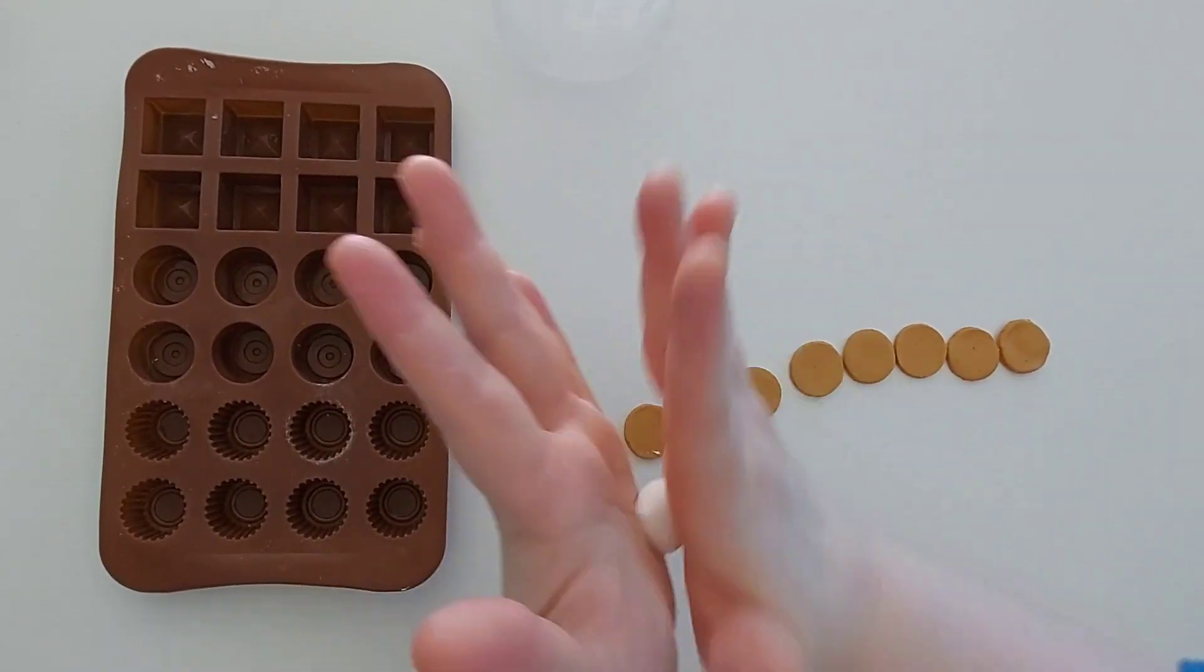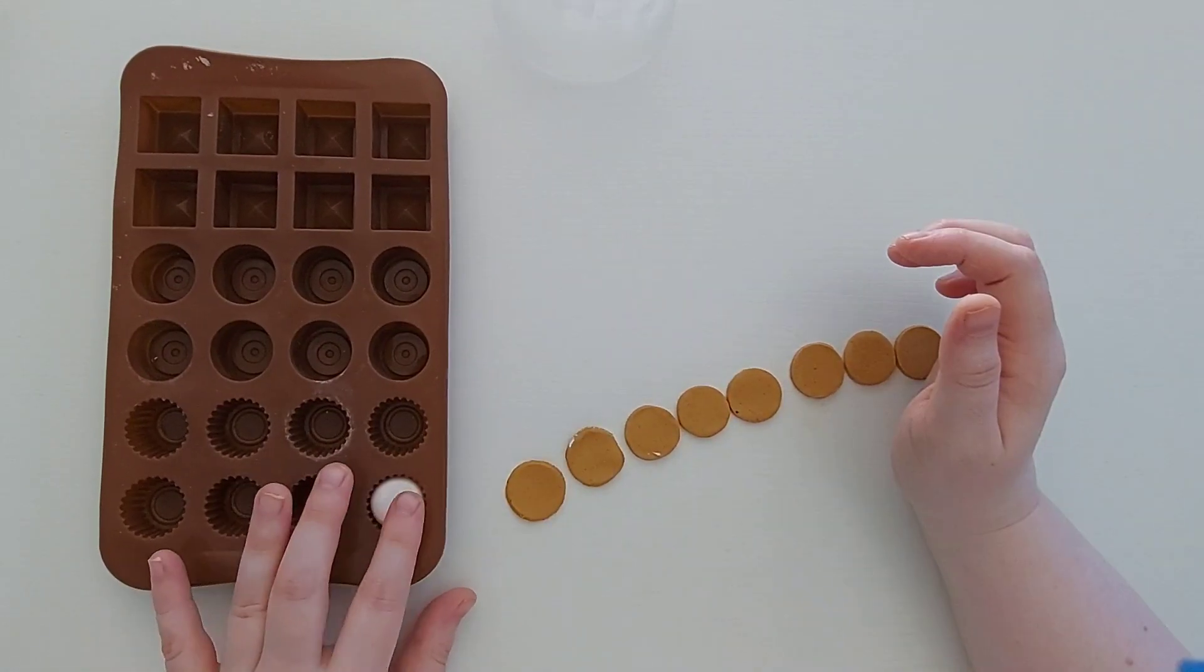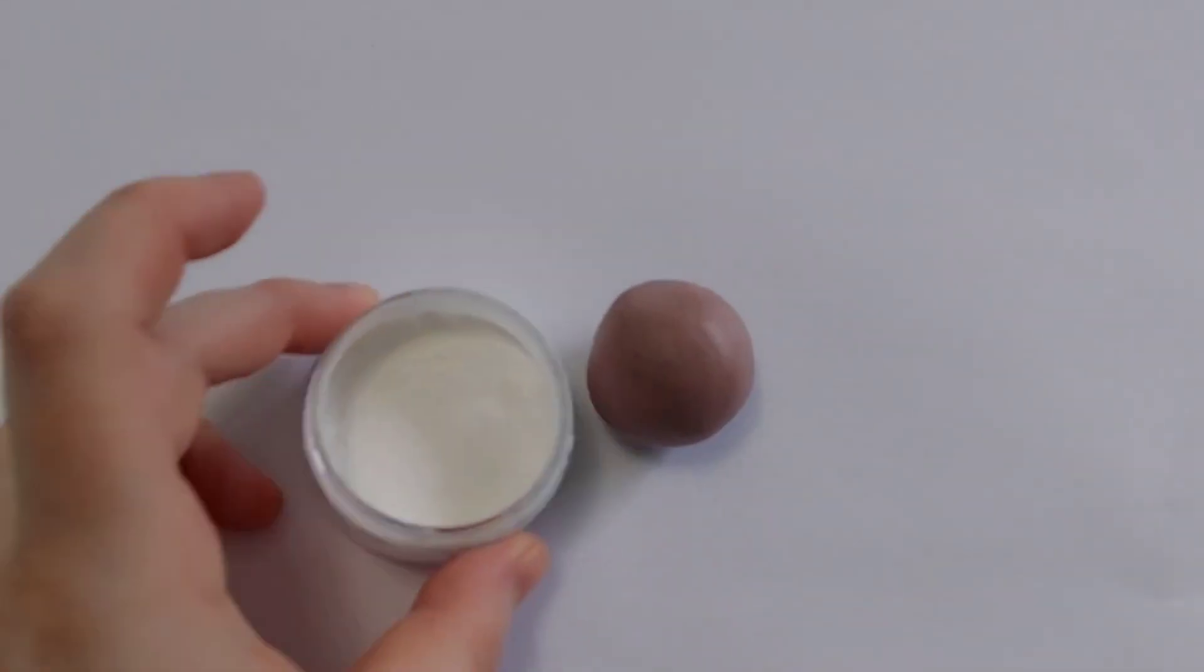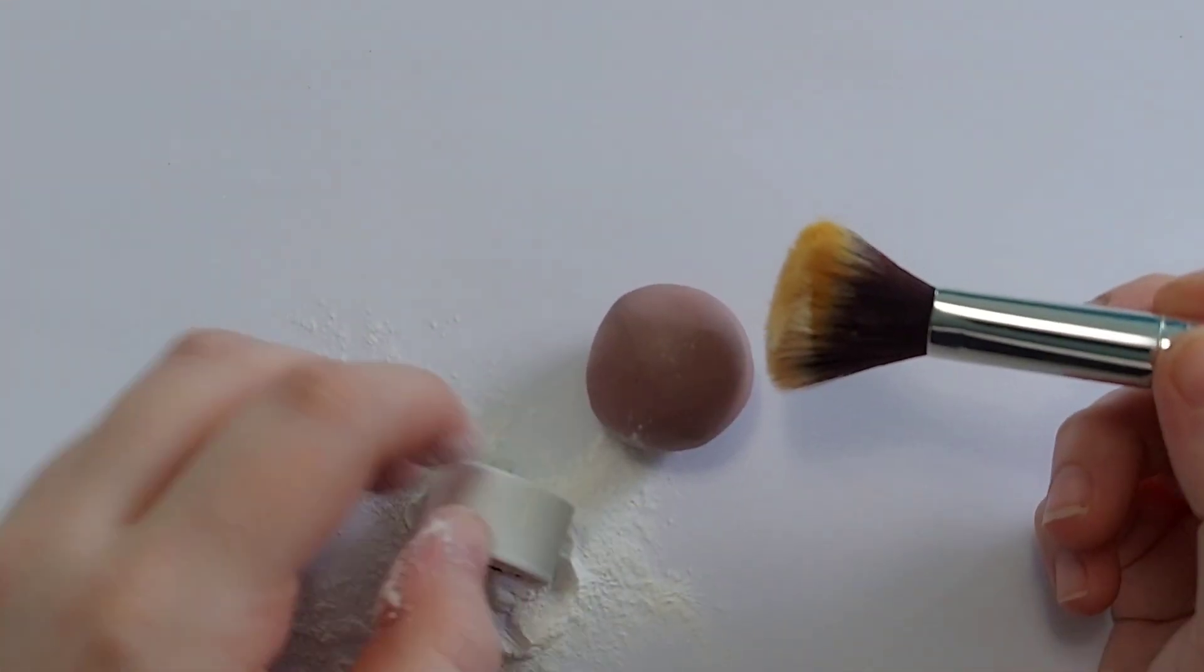Let me start off by saying if you want this exact mold, you can get this at your local Michaels or you can order it online. Now if you don't have a mold, that's completely okay. I'm going to show you here how to make one out of scrap polymer clay.